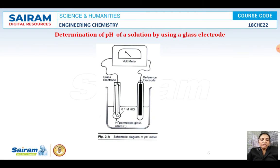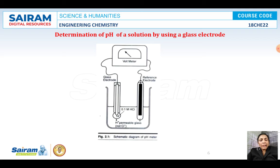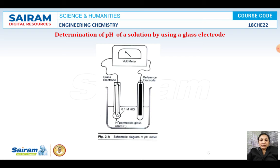Next is the determination of pH of the solution by using a glass electrode. The glass electrode is coupled with the calomel electrode and they are connected to a pH meter. The glass electrode combined with the secondary reference electrode is dipped in the solution for which the pH has to be measured. In the laboratory, everything is set in the instrument itself, and when we dip the electrode directly, it shows the pH.